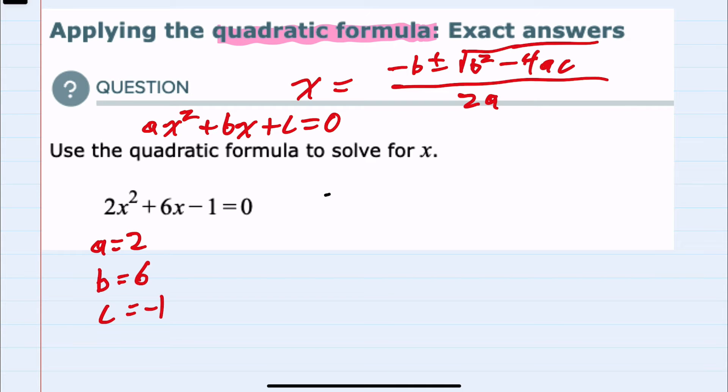And so plugging into our formula, x is equal to, first is negative b and b is 6. So that would be negative 6 plus or minus the square root of b squared. Again, b is 6, so b squared is 36 minus 4 times a, which is 2, times c, which is negative 1. And this is all over 2 times a or 2 times 2.